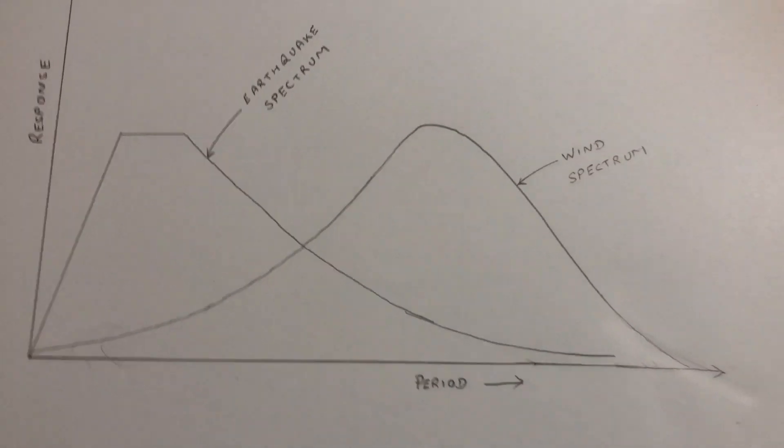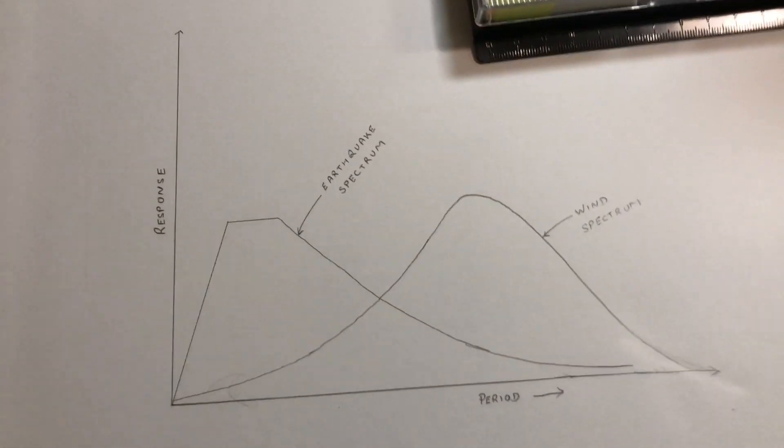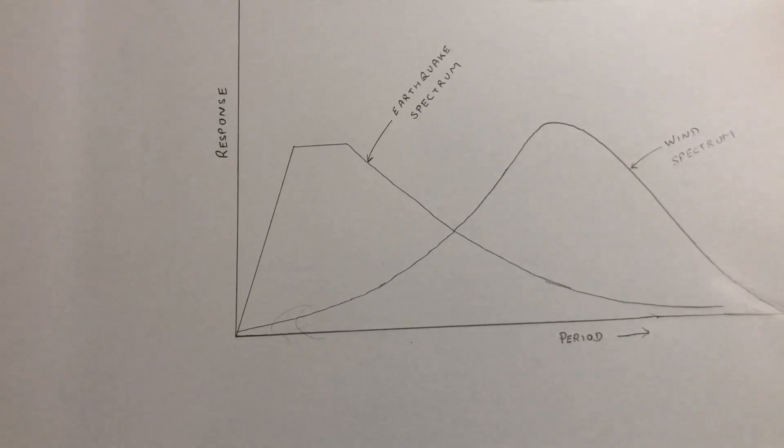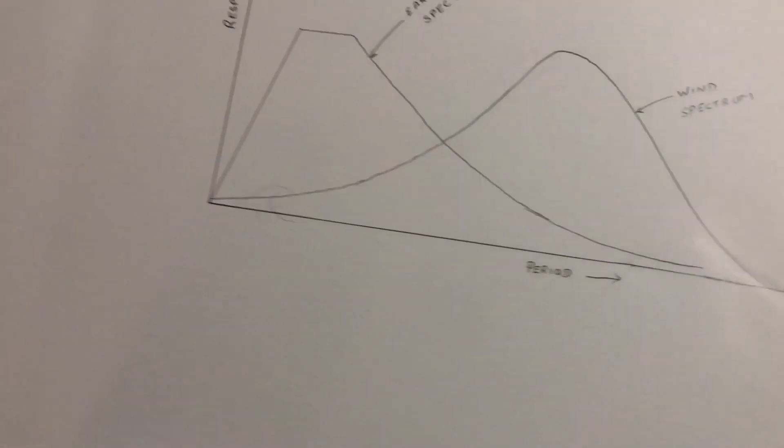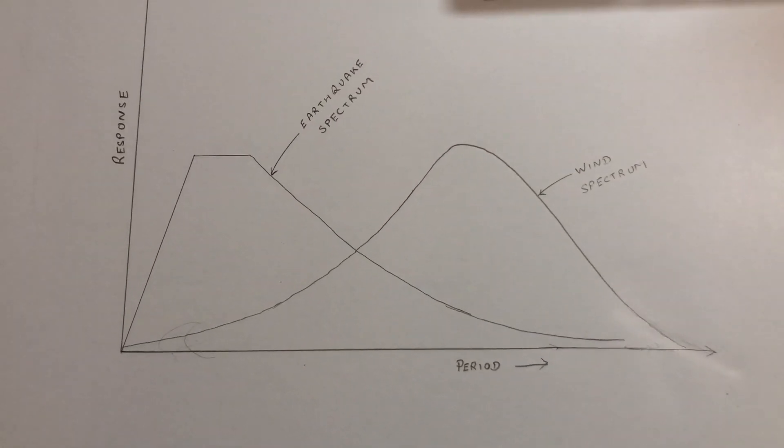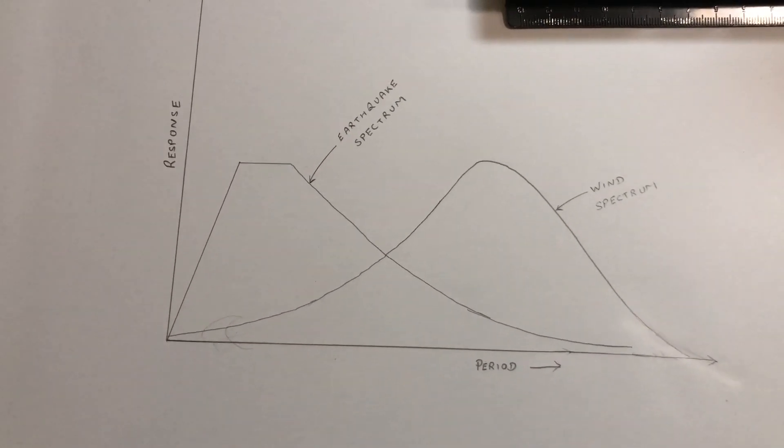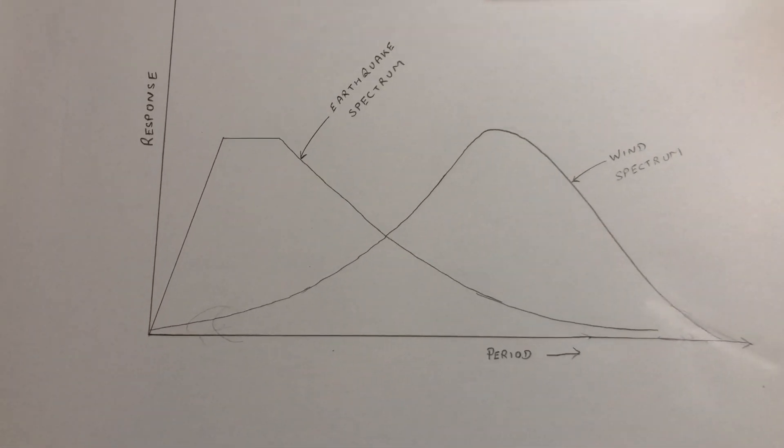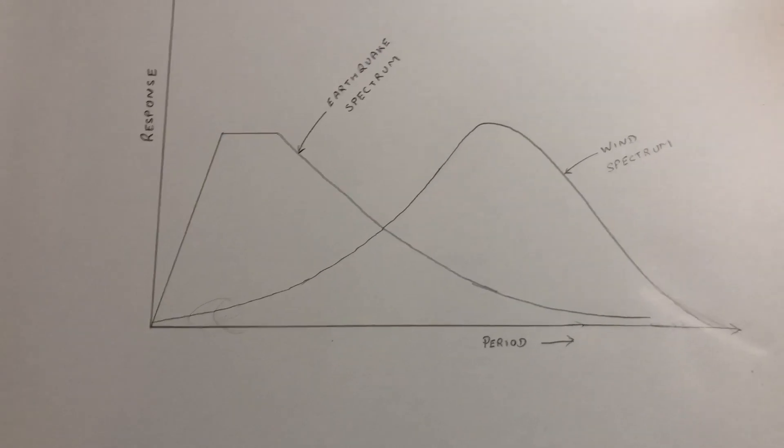So in a tall building we have to do so many things, like provide supplemental damping to stabilize the system, to reduce the wind oscillations. Because let's say if you are living on the 100th floor of a building and suddenly a tornado or a violent wind storm comes into that region, what will happen?